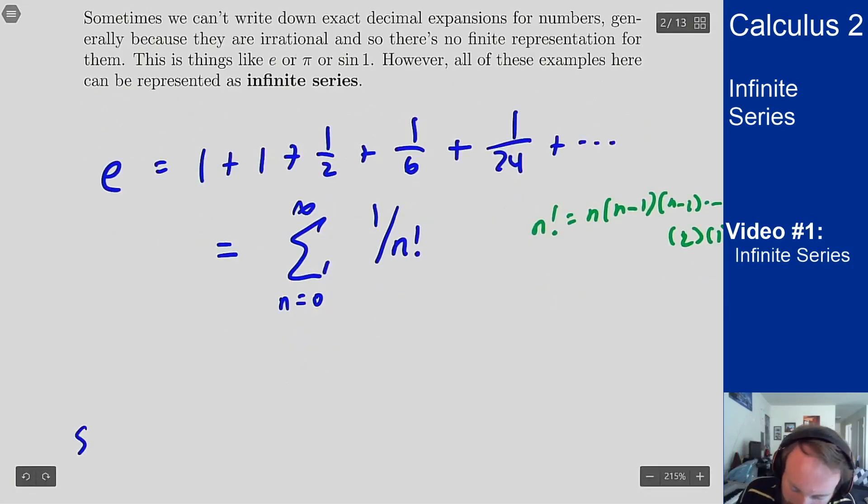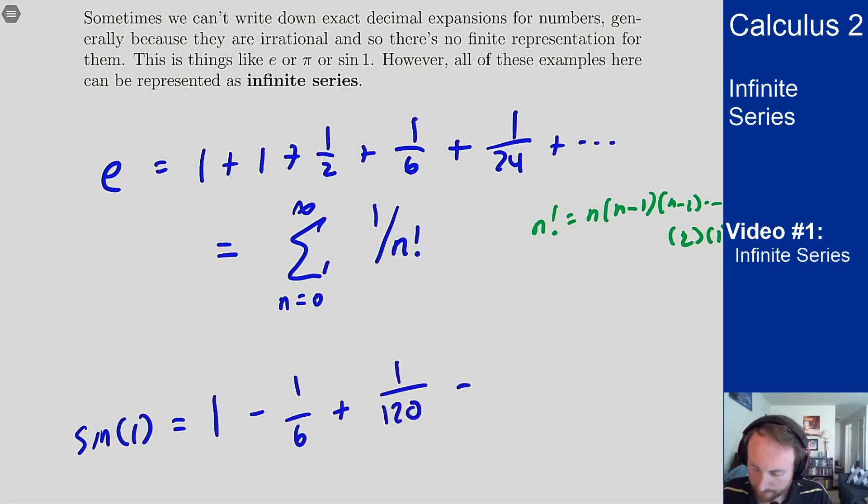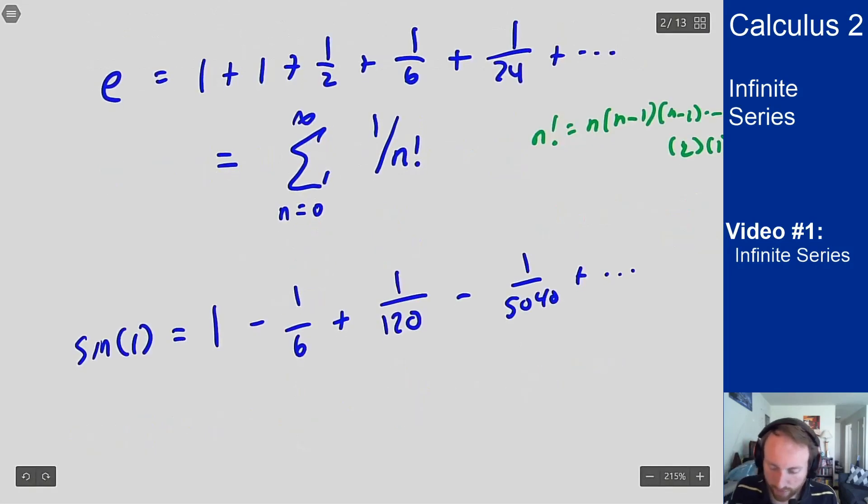Similarly, something like sine of 1, I know is 1 minus 1/6 plus 1/120 minus 1/5040 and so on, which in a series notation is sum from n equals 1 to infinity of negative 1 to the n, because it alternates, and we'll talk about what that means in a little bit, over 2n minus 1 factorial.